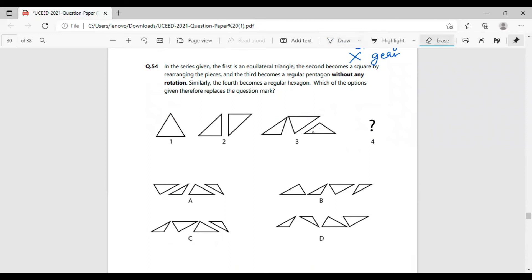In this question, figure two, if we rearrange the two given triangles, we can actually make a square. Similarly, in part three, the figure three, if we rearrange the triangles, we can make a pentagon.